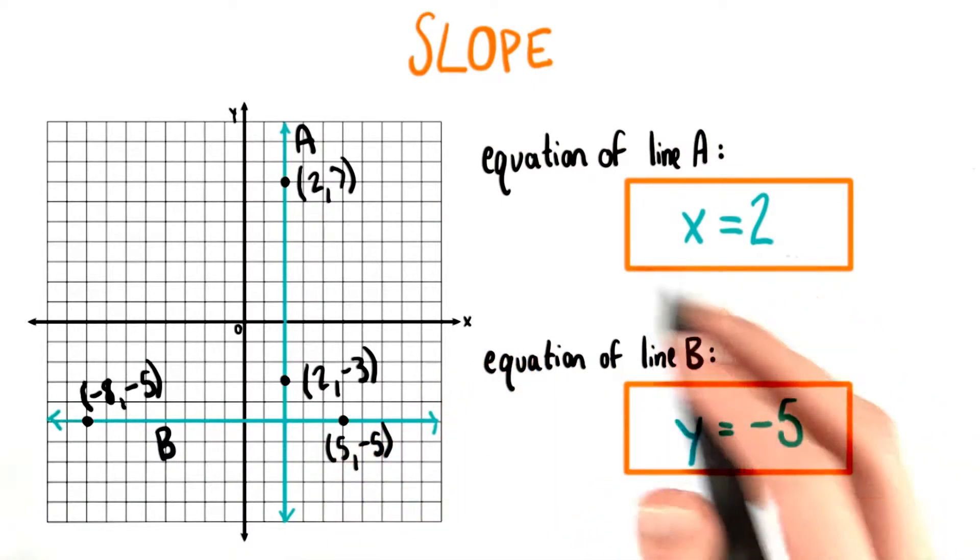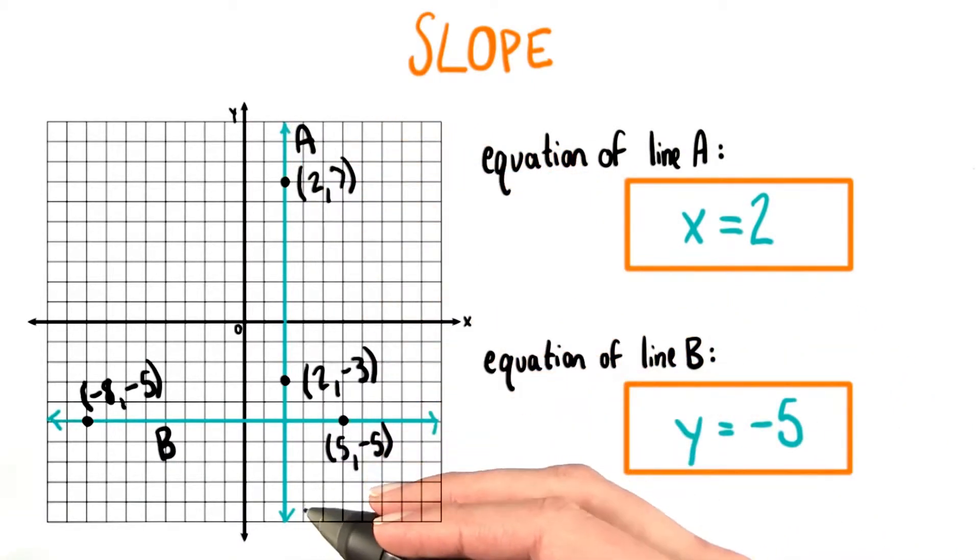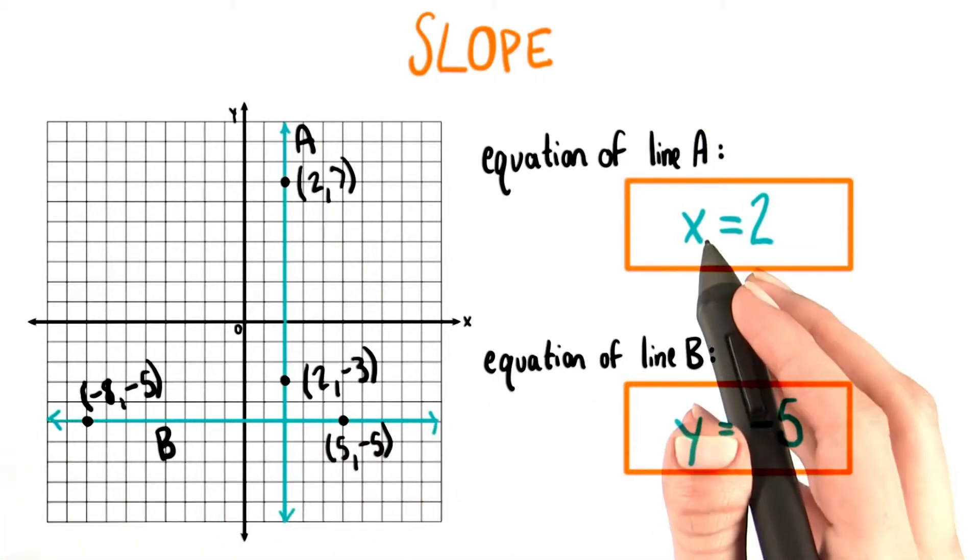So this is the only equation that we can write that fits every point along that line. There's a similar deal for line B and other horizontal lines, but regarding their y coordinates instead of their x coordinates.